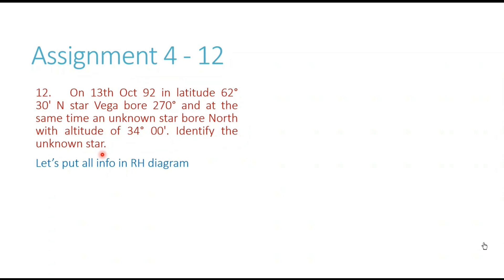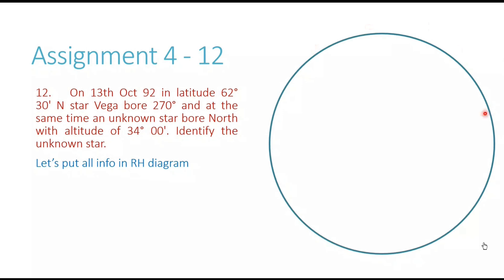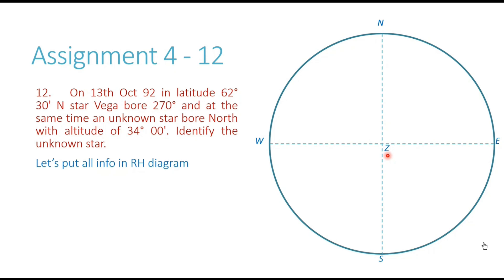Let's put all the information in the rational horizon diagram. We have the rational horizon on screen now. We can show the N, E, S, W points. The center of this diagram represents the zenith of the observer — the Z point — and irrespective of where the observer is or where the body is, these five points N, E, S, W on the rational horizon and point Z at the center remain at these locations.